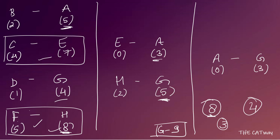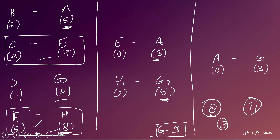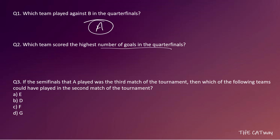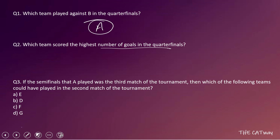Now let's answer the questions. Question 1: Which team played against B in the quarter-final? We can see that A played against B. Question 2: Which team scored the highest number of goals in the quarter-finals? H scored 8 goals, which is the highest — so H scored the most goals in the quarter-final.